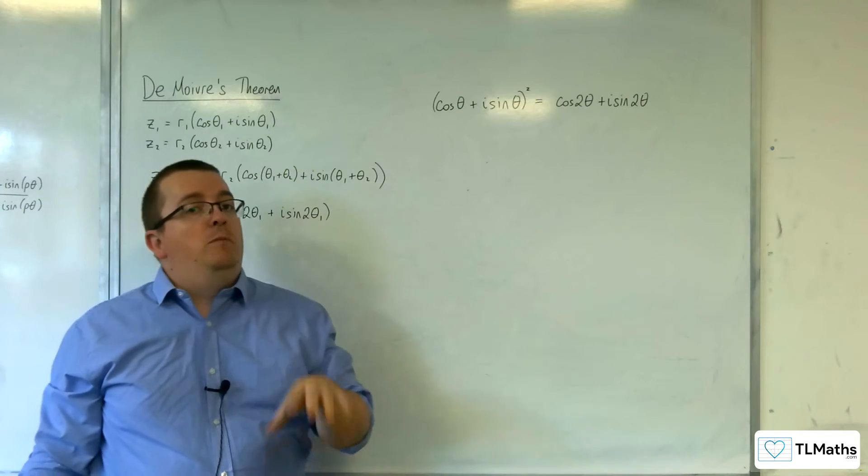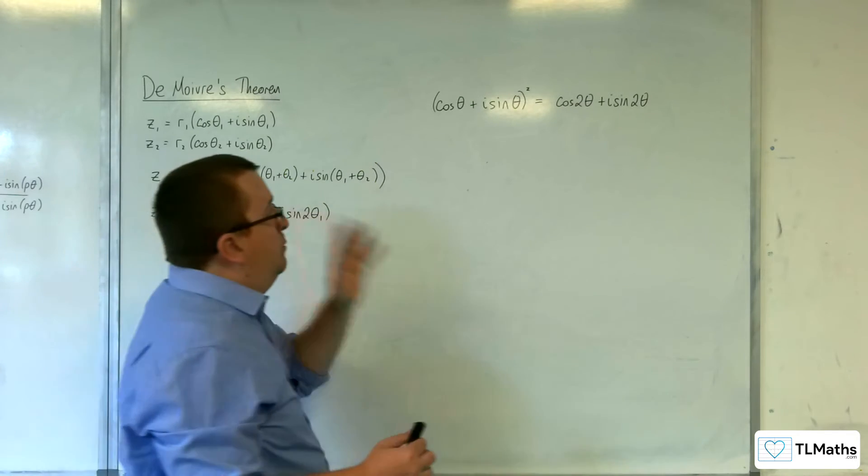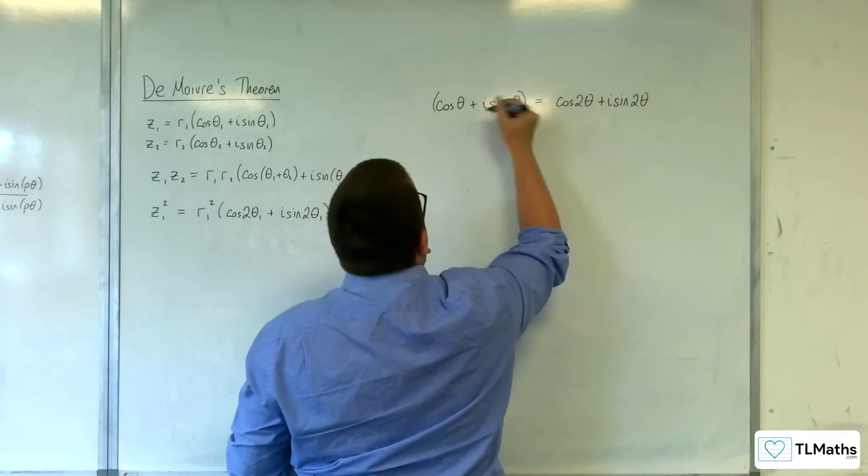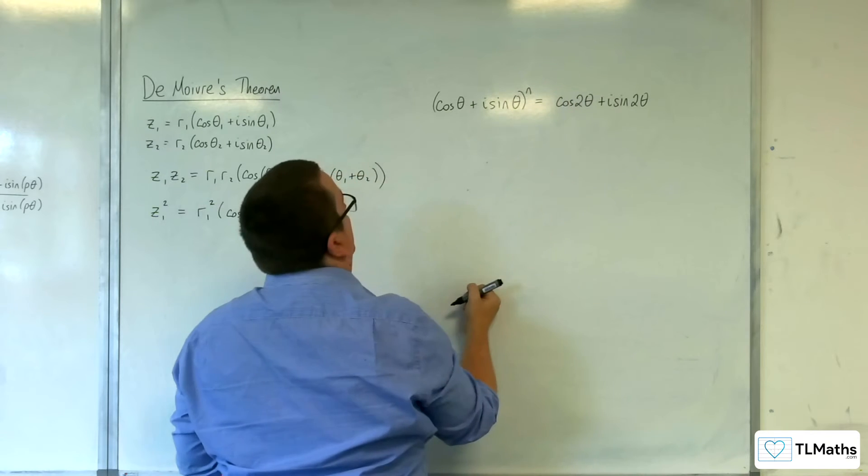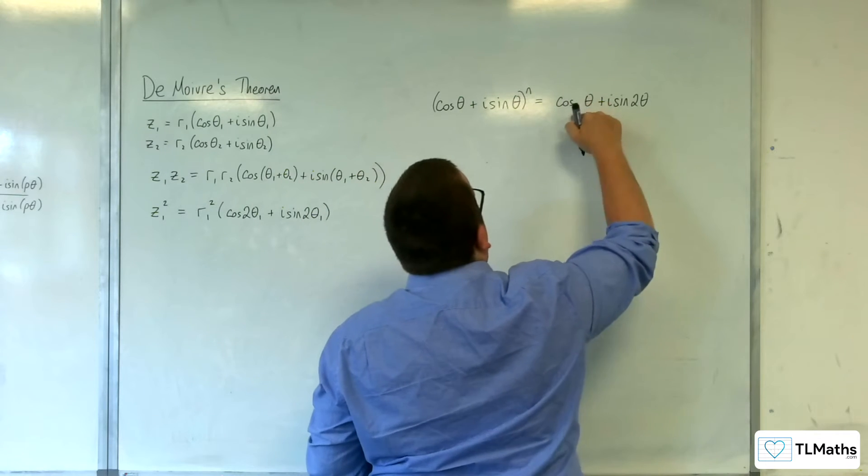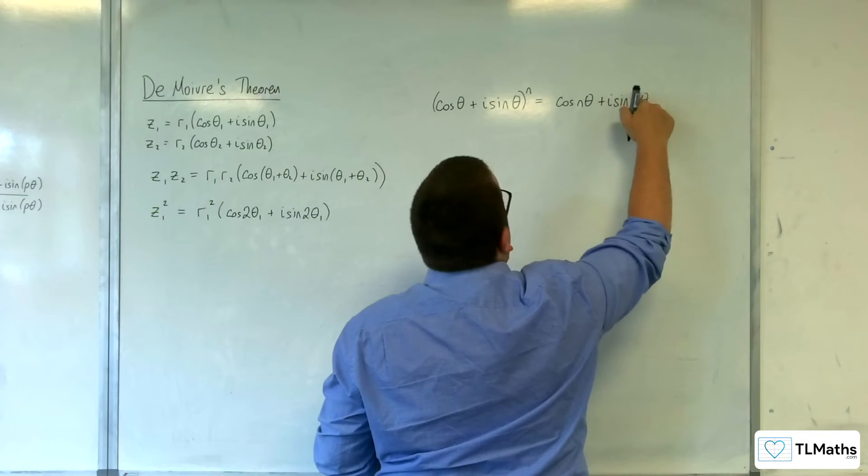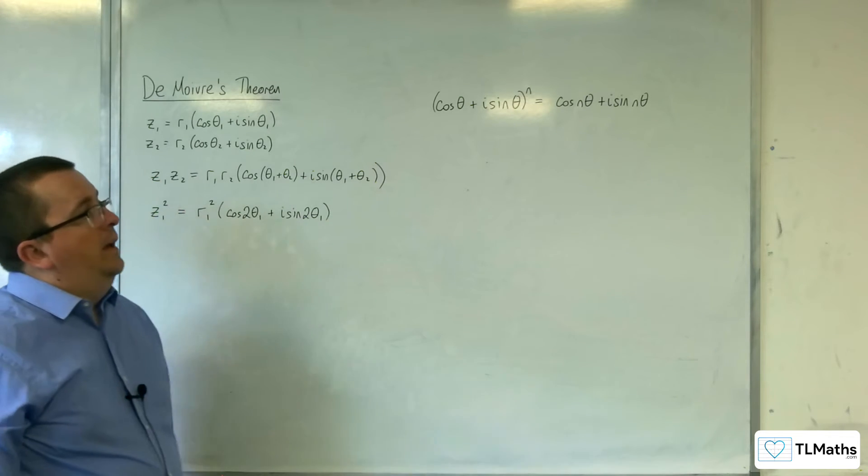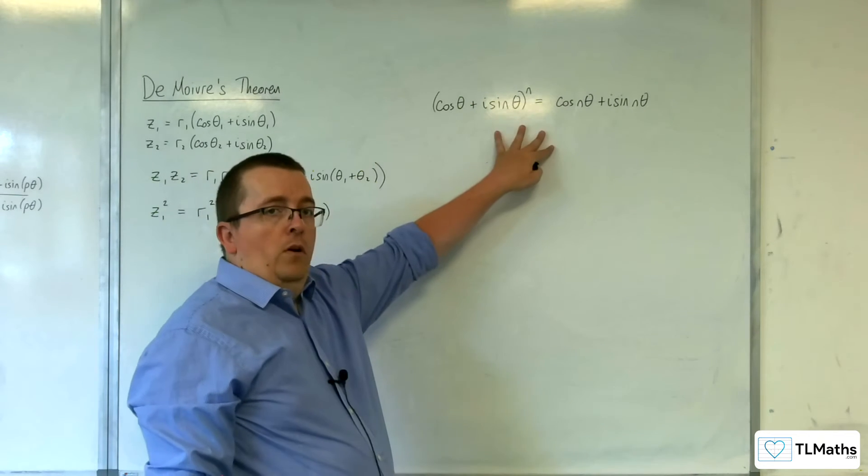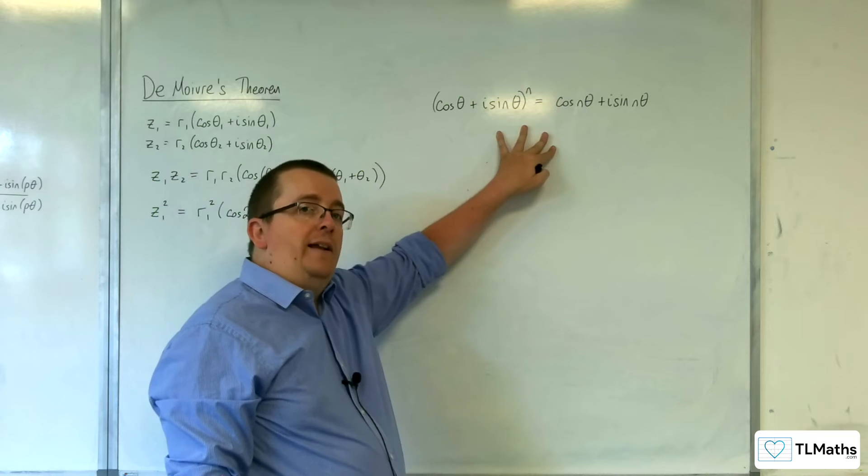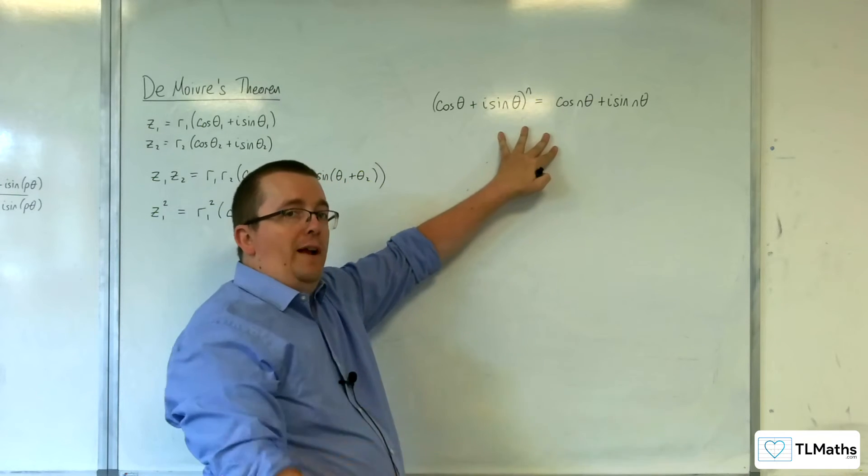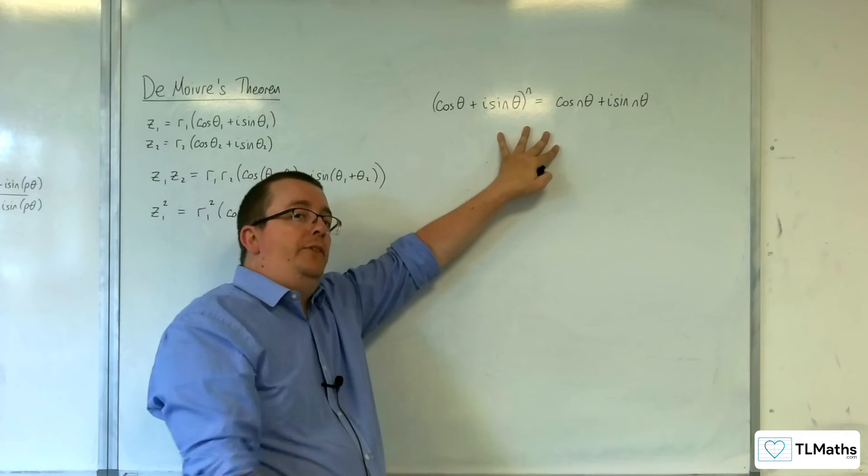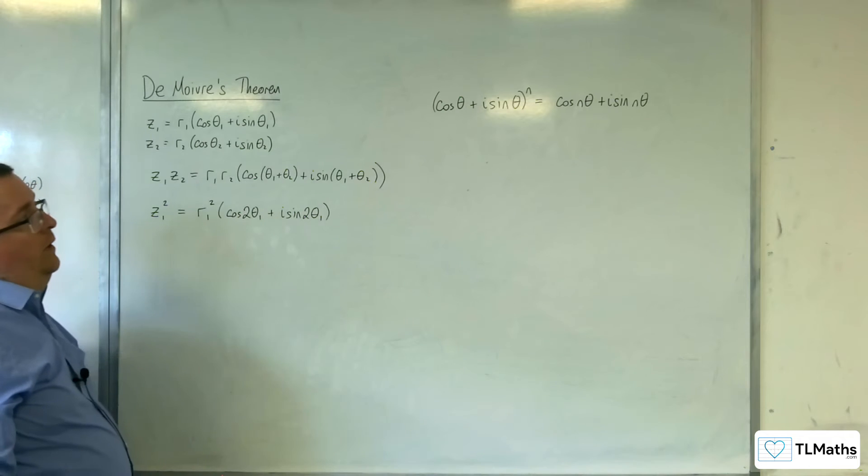Now, De Moivre's theorem goes one step further. De Moivre's theorem says that if you have cosine theta plus i sine theta to the N, then that is cosine of N theta plus i sine of N theta. And I've proved that for all positive values of N, positive integer values of N, using proof by induction. So that's proved back in section A.